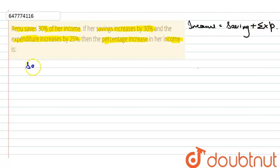So, savings is equal to 30%. We can rewrite it as 3 by 10. So, this will be the income, and this is saving. Therefore, expenditure will be 7.